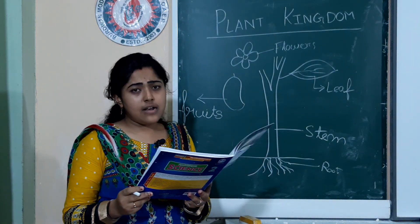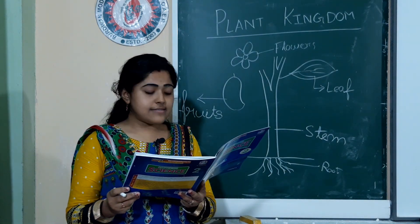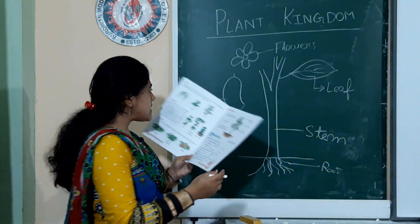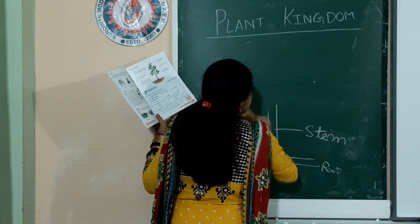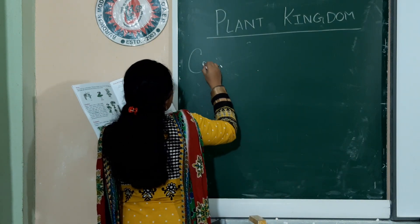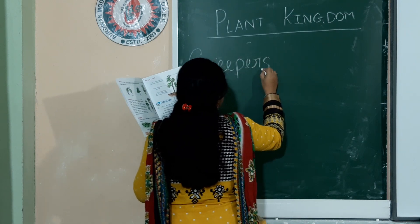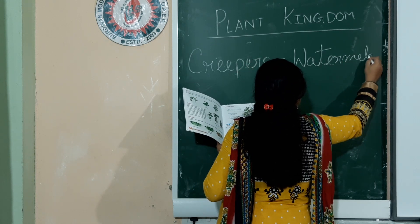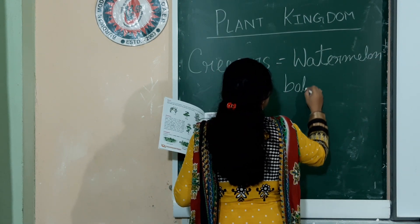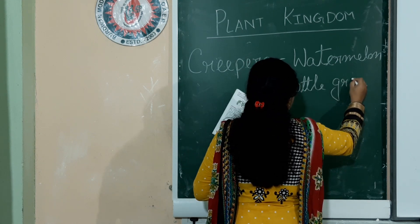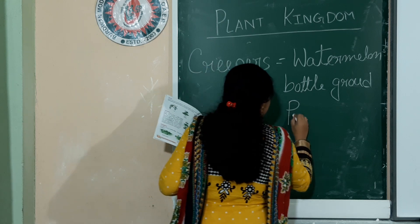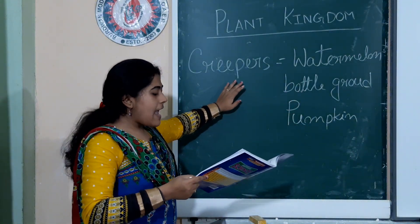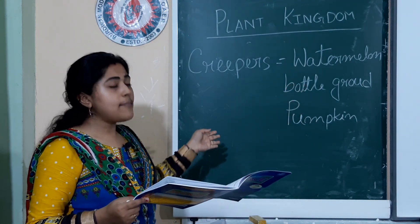Next are creepers. Creepers have a weak stem. They grow along the ground as they have no support. Examples of creepers are watermelon and pumpkin. You can see that creepers grow along the ground as they have no support.